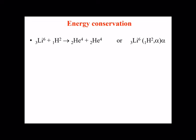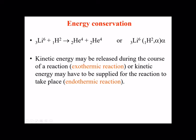First, we will discuss energy conservation in nuclear reactions. Let's consider a particular nuclear reaction: we have lithium-6 as a target, and it is being hit by a deuterium nucleus. So we have a collision between lithium-6 and deuterium, and as a result of that nuclear reaction we get two alpha particles. You can write the nuclear reaction in either notation — both mean the same thing.